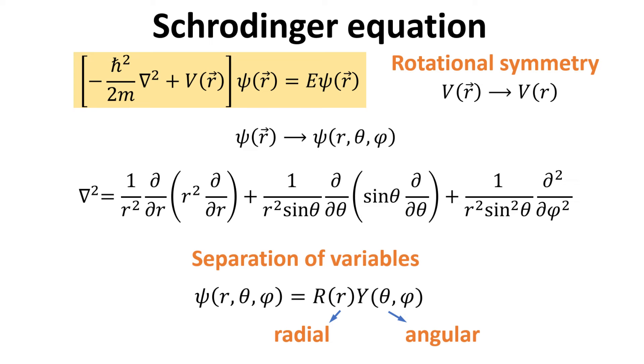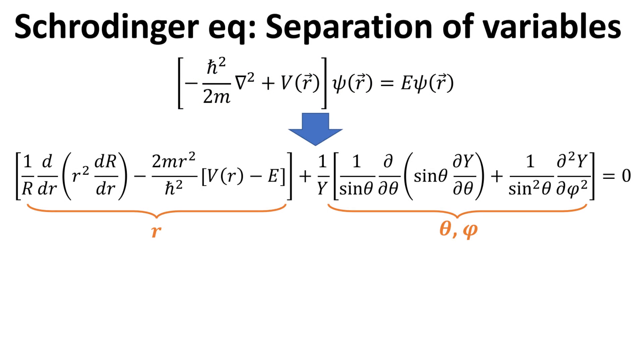We shall insert this new separable form of the wave function into the Schrödinger equation. After some manipulation and dividing the equation throughout by the wave function, and multiplying by the constant minus 2mr² divided by ℏ², we obtain the following as shown.